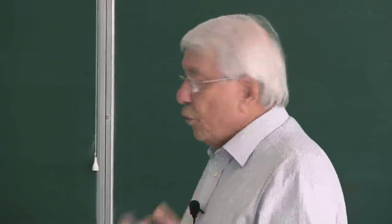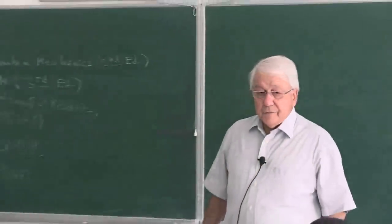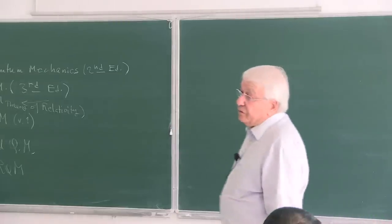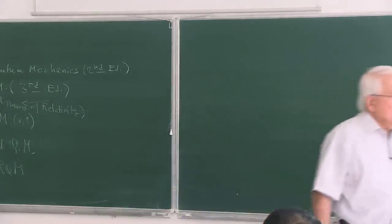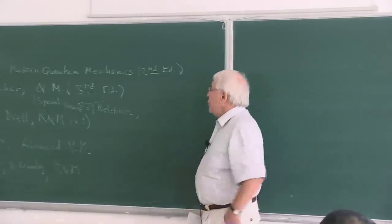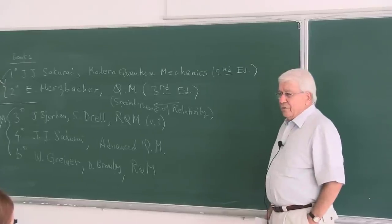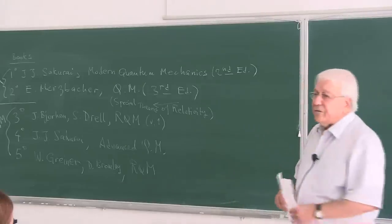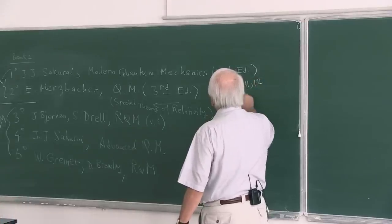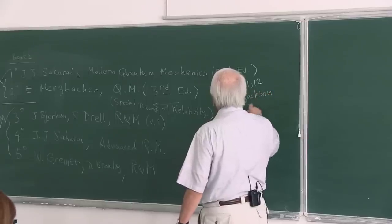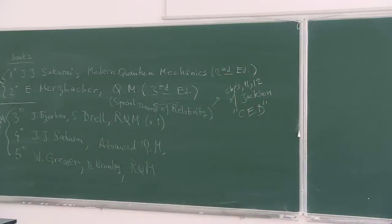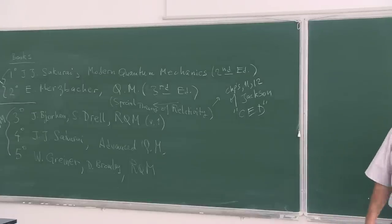The special theory of relativity covered in undergraduate modern physics is not sufficient, because we are going to construct the formalism in the four-dimensional Poincaré space. You'll need four-dimensional vector notation and a sophisticated language of special relativity. I suggest you consult Jackson's Classical Electrodynamics, the textbook for that course — I think chapters 11 and 12 — which will be quite useful for providing introductory knowledge on the formalism of special relativity.